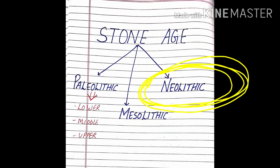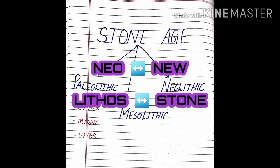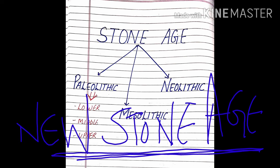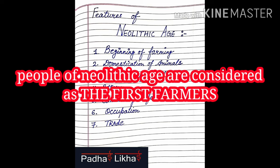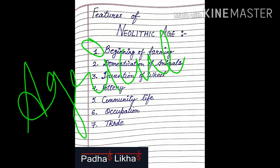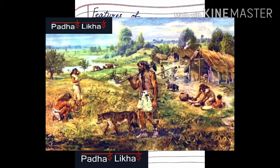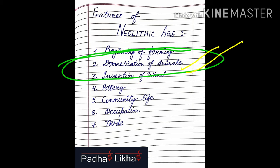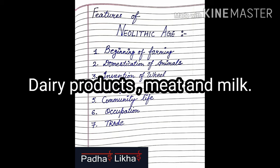The Neolithic Age is the last period of the Stone Age. The word comes from Greek: 'neo' meaning new and 'lithos' meaning stone, so it is also known as the New Stone Age. The main feature of the Neolithic Age is the beginning of farming. The people of the Neolithic Age were the first farmers. They also began rearing cattle, sheep, goats, and pigs, and hunting of wild animals was replaced by dairy products, meat, and milk.